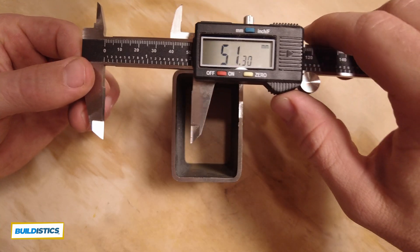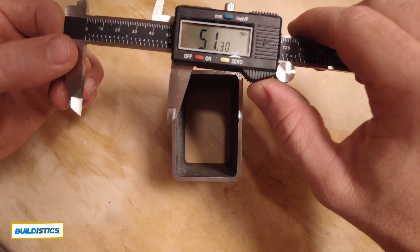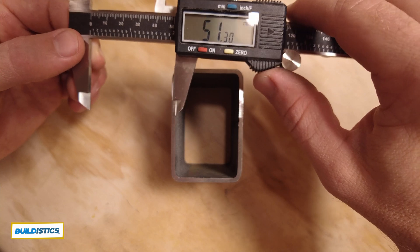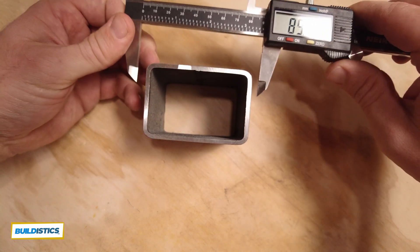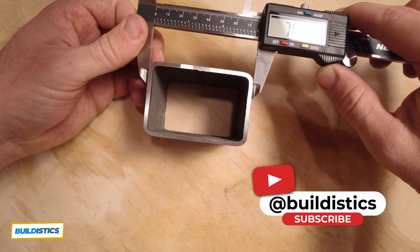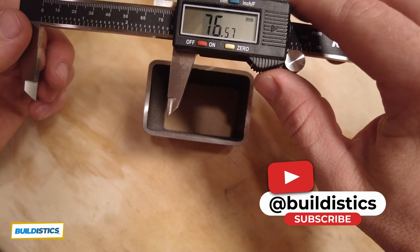So here it's approximately 51.3. So I'd probably print it at 52 millimeters. And then your steel long is 76.5.